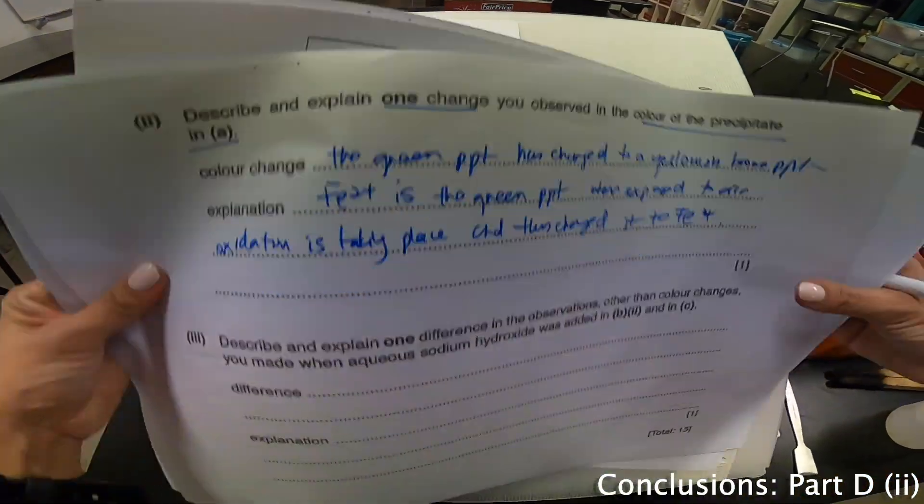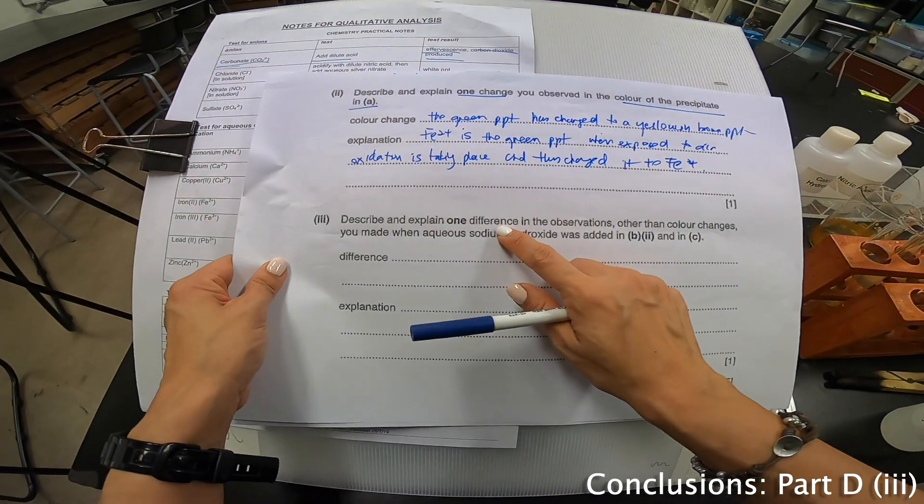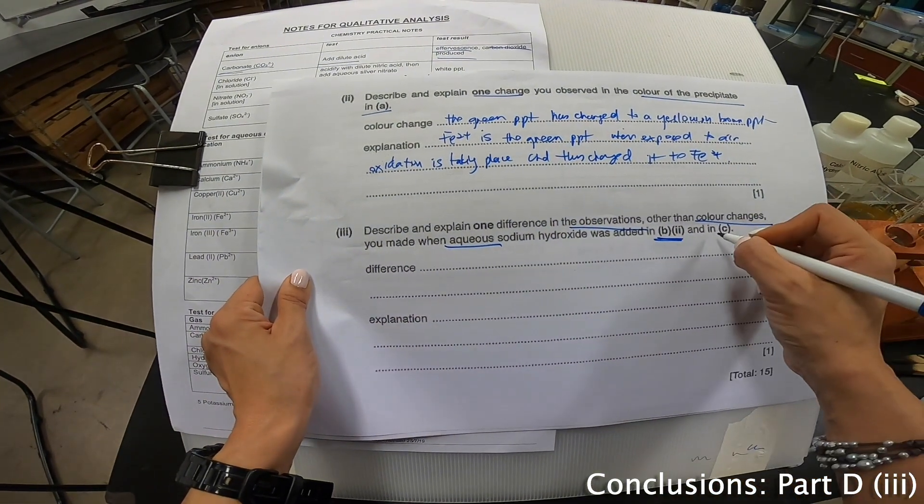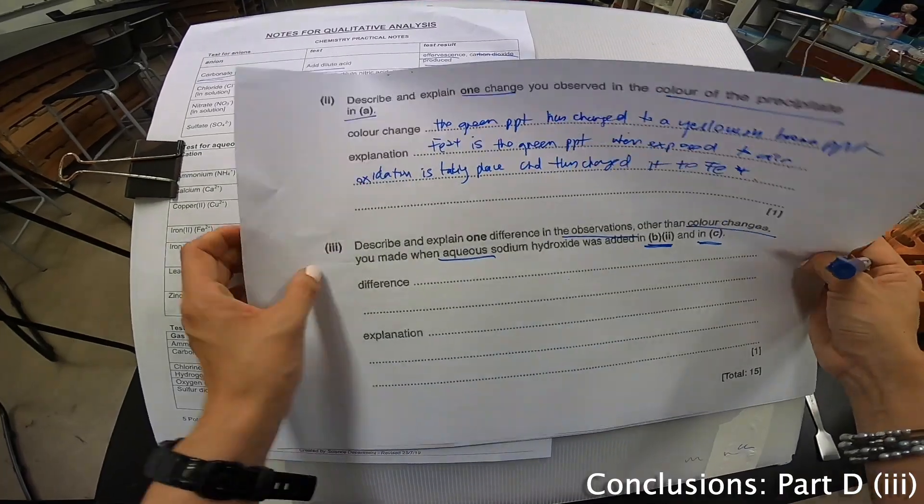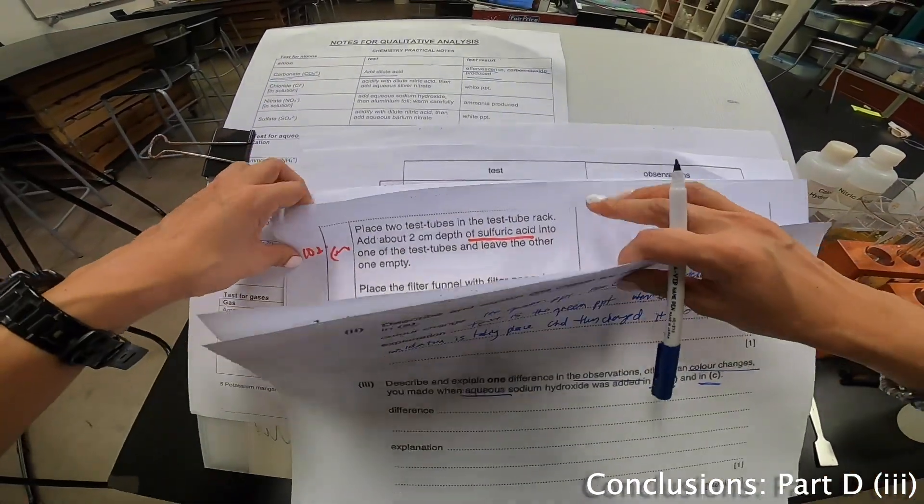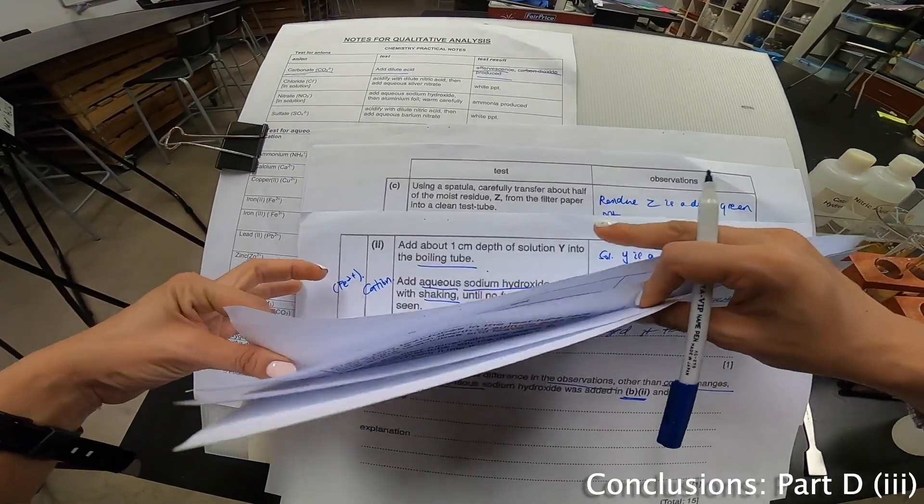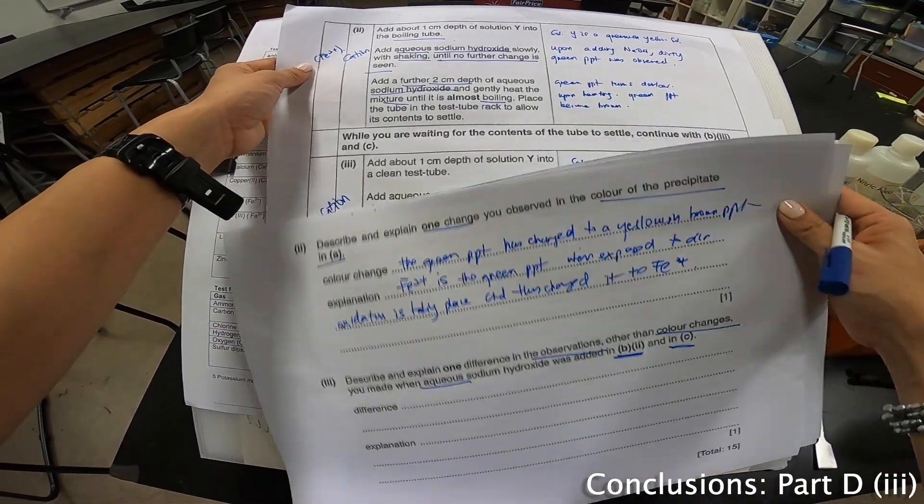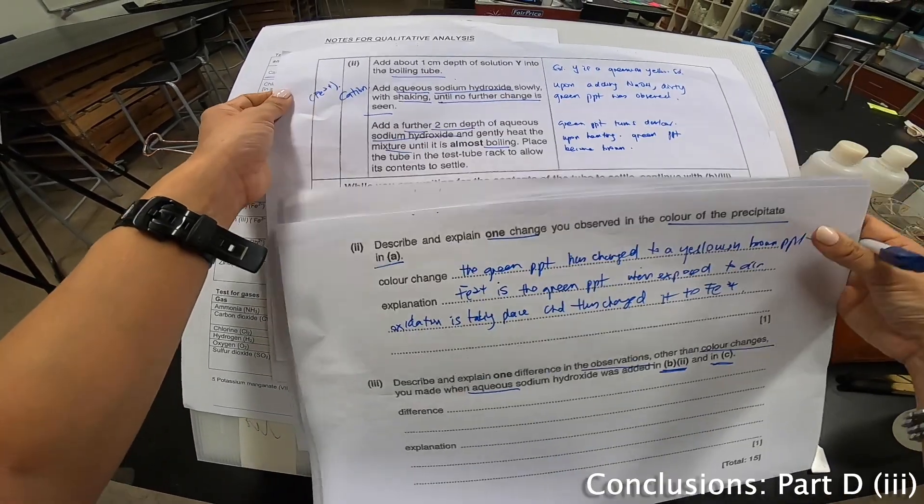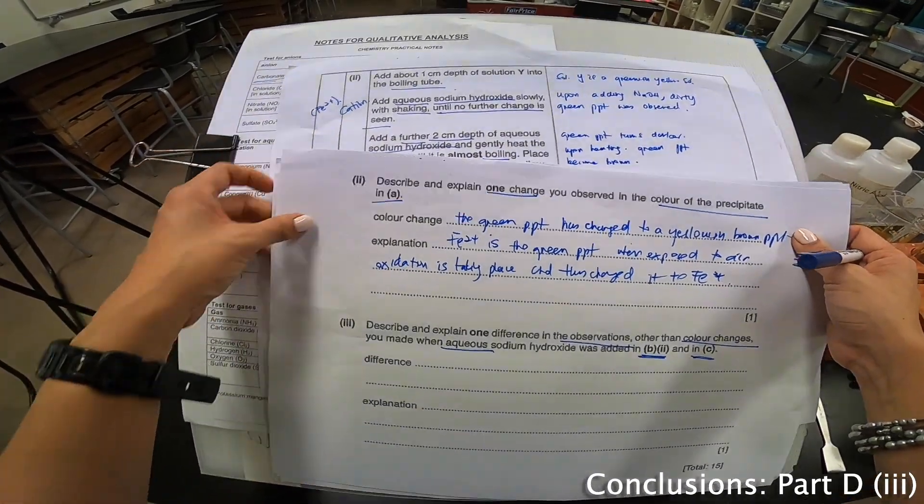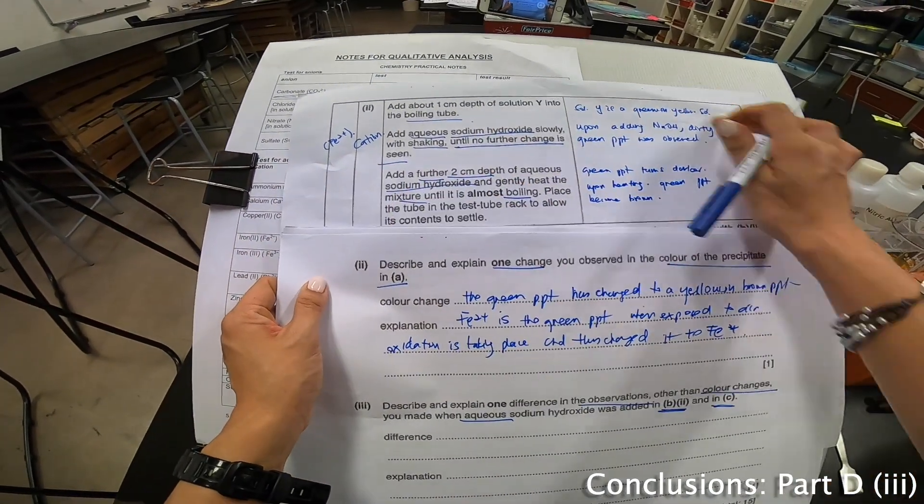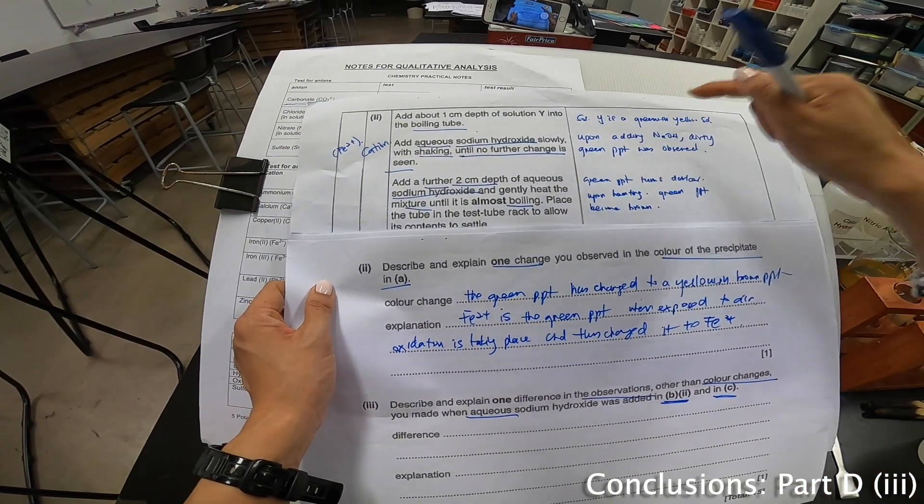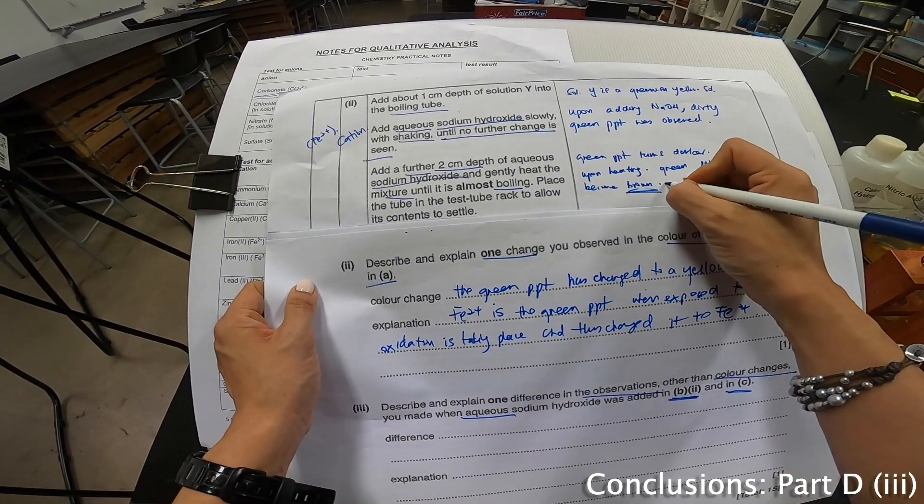Let's move on to the last part. We are almost done, to the finish line. Describe and explain one difference in the observation, other than color changes you make when aqueous sodium hydroxide was added in B part 2 and in C. Now, in C, we see Fe²⁺. And let's go back and take a tour back to B part 2. Over here, B part 2, this portion here. I can see that this portion over here, B part 2, we are gently heating it, causing the Fe²⁺ to change to become brown PPT.